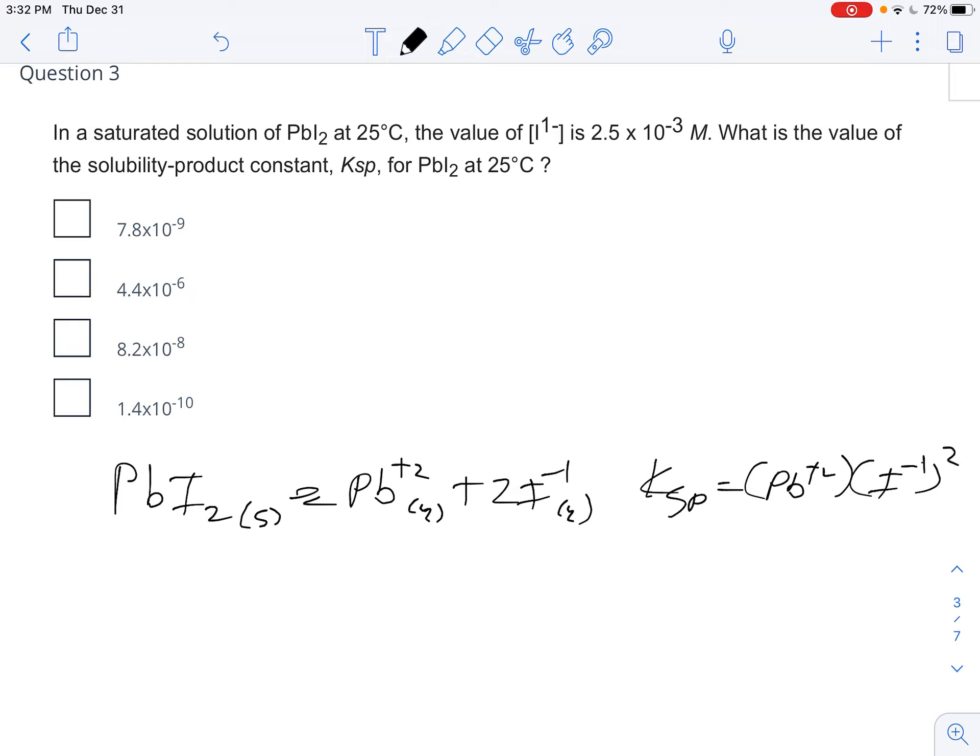I got an I, C, and E here. We don't really care about that because it's a solid. It says in a saturated solution the value of the iodide is 2.5 times 10 to the negative third. Now, assuming you didn't start with any of those guys to begin with because they're telling you it's saturated.